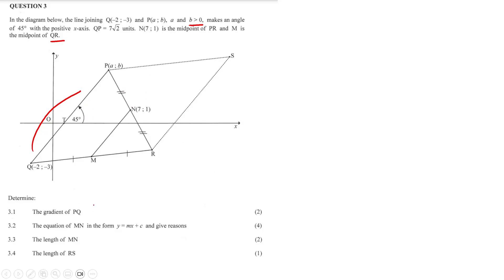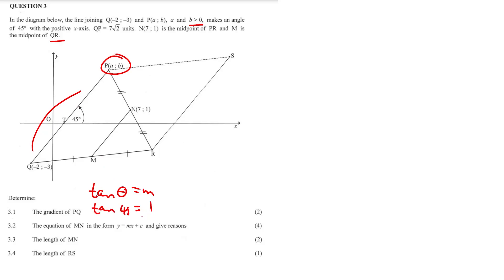Question 3.1: Calculate the gradient of PQ. To get the gradient of PQ we need two coordinates and use the formula (y₂ - y₁)/(x₂ - x₁), but we don't know the coordinates of P. So we use the angle of inclination: tan θ = m. Our angle is 45 degrees, so tan 45 = 1. The gradient of PQ is 1.